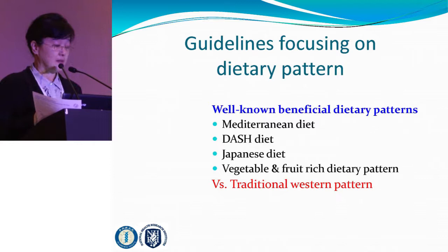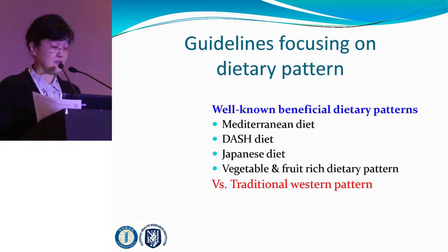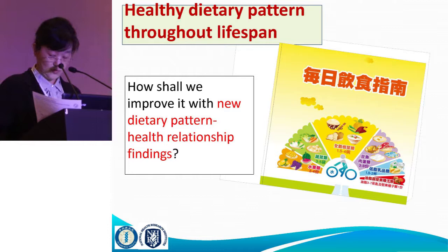We know that it is very important to focus on dietary pattern analysis. In the U.S. guidelines as well as many other guidelines, people are using information from well-known beneficial dietary patterns, including the Mediterranean diet, Japanese diet, and findings about vegetables-rich dietary patterns versus the traditional Western pattern. I think it's very important, but how should we improve our guidelines? It is very important to do more research in terms of dietary pattern analysis, and I will focus more on the data-driven approach of data mining.